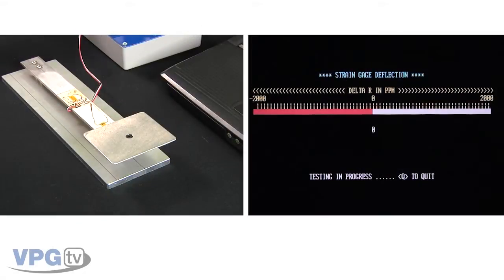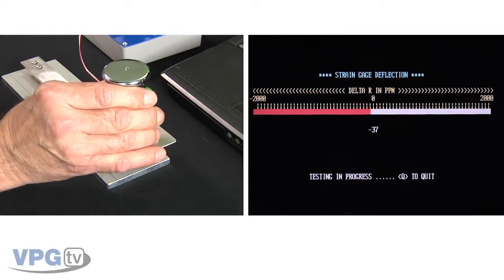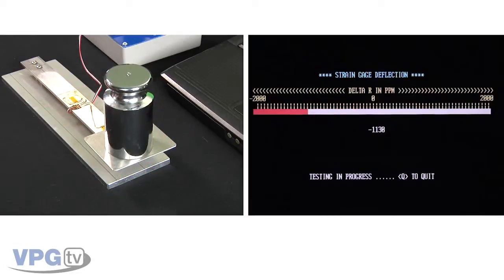Let's apply a very measured load to the strain gauge beam. Here is a 1,000 gram weight standard. It causes a negative 1,367 ppm change.